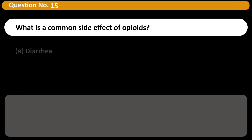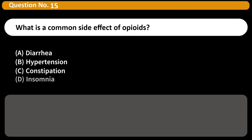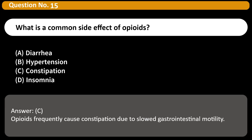What is a common side effect of opioids? A. Diarrhea. B. Hypertension. C. Constipation. D. Insomnia. Answer: C. Opioids frequently cause constipation due to slowed gastrointestinal motility.